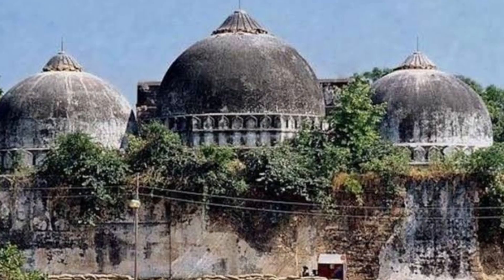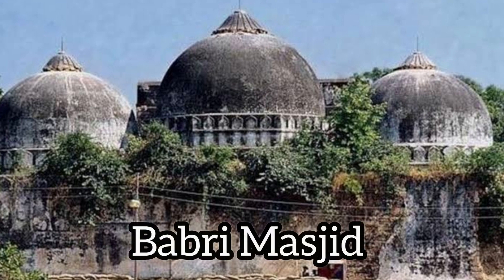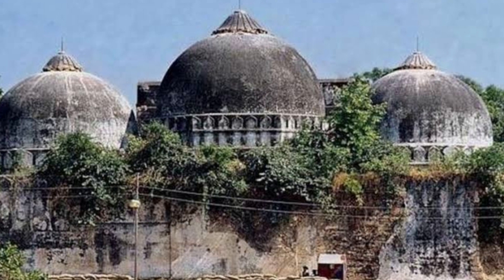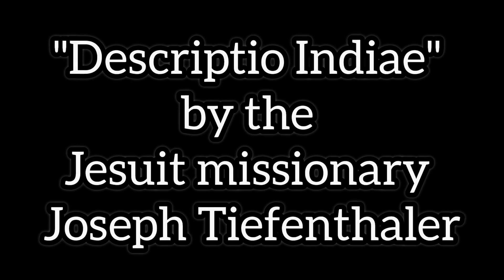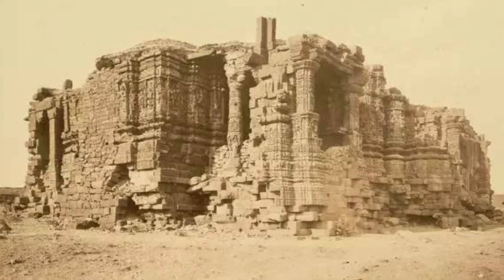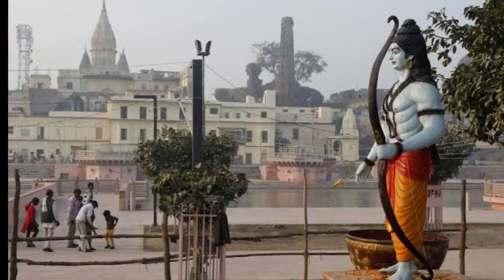Later, the Mughals constructed a mosque at that site — the Babri Masjid. According to the Latin book Descriptio Indie by the Jesuit missionary Joseph Tiefenthaler, the mosque was constructed by destroying the Ramkat Temple, believed to be the fortress of Rama in Ayodhya, and the Bedi, where the birthplace of Rama is situated.